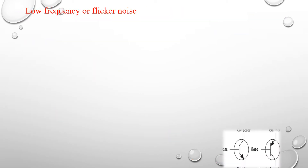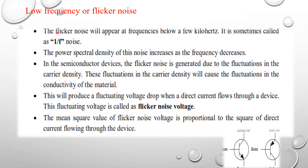Low-frequency or flicker noise is an internal noise. Flicker noise appears at frequencies below a few kilohertz and is sometimes called 1/f noise. The power spectral density of this noise increases as the frequency decreases. In semiconductor devices, flicker noise is generated due to fluctuation in the carrier density, which causes fluctuation in the conductivity of the material, producing a fluctuating voltage drop when direct current flows through a device. This fluctuating voltage is called flicker noise voltage.